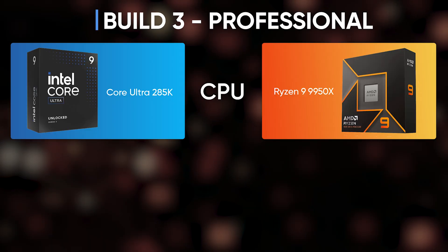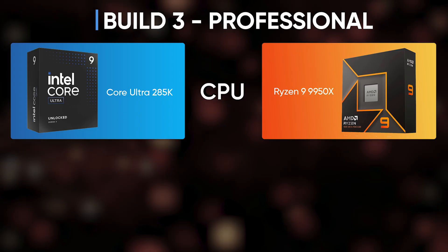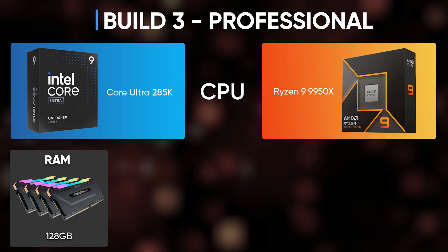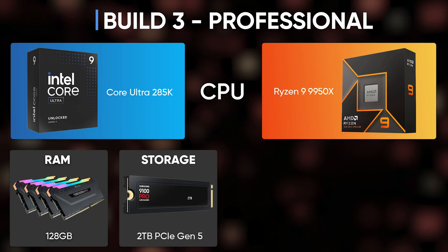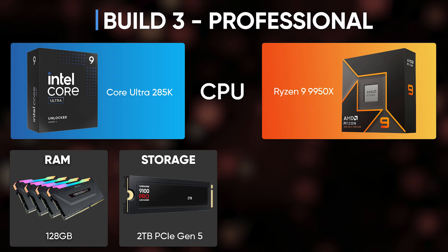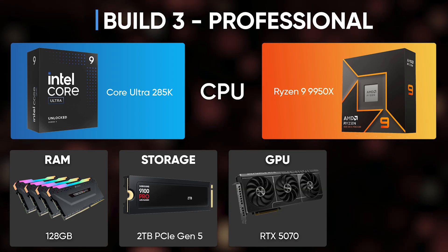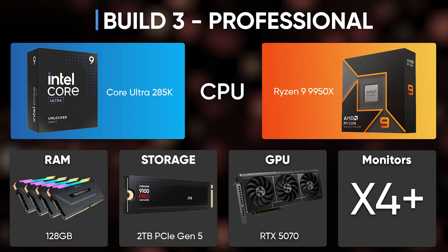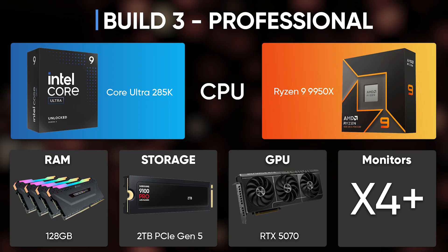For the pro build: an Intel Core i9 or Ryzen 9, 64 to 128GB of RAM, fast NVMe storage preferably PCIe Gen 5, and an RTX 5070 or 5080, which should keep you good for up to 4 monitors.